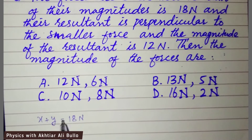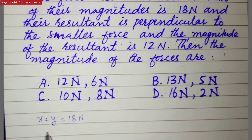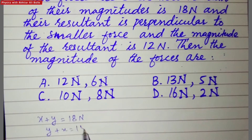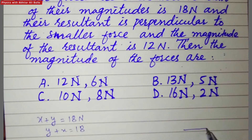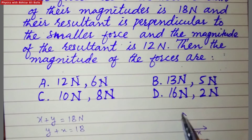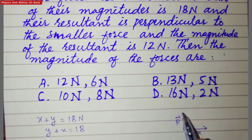We can write it as y plus x is equal to 18. The first force — the minimum force — is x, and the resultant is perpendicular to the minimum force, so the other force is y.